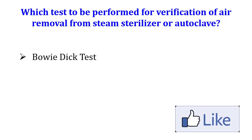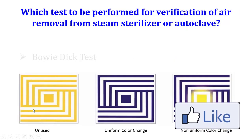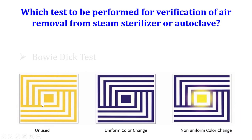This is the Bowie-Dick test kit. It consists of paper strips — this strip is yellow in color. This is an unused strip. It is packed and placed in a designated place inside the steam sterilizer. The color of the strip is yellow before the test.